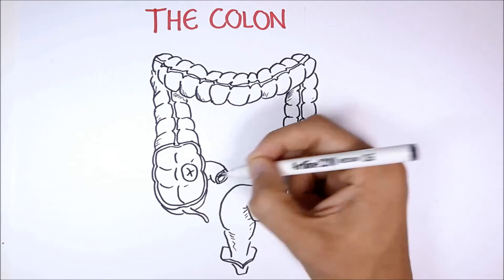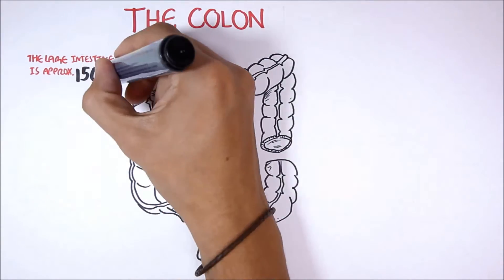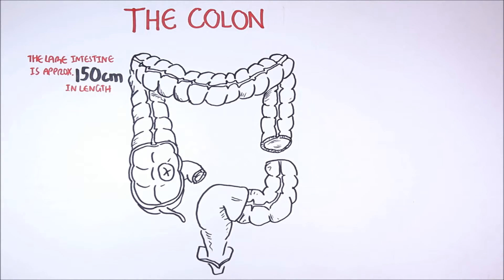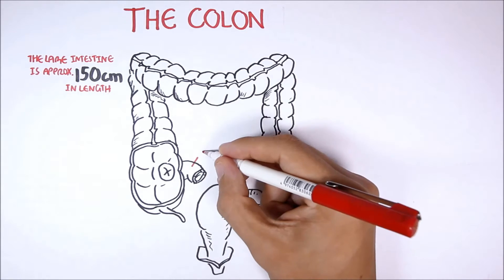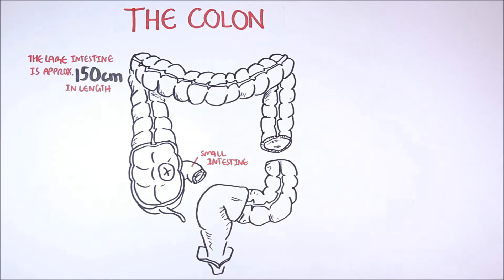The colon, or large intestine, is approximately 150 centimeters in length. It is divided into a few sections. The small intestine here will join to the first part of the large intestine, known as the cecum.